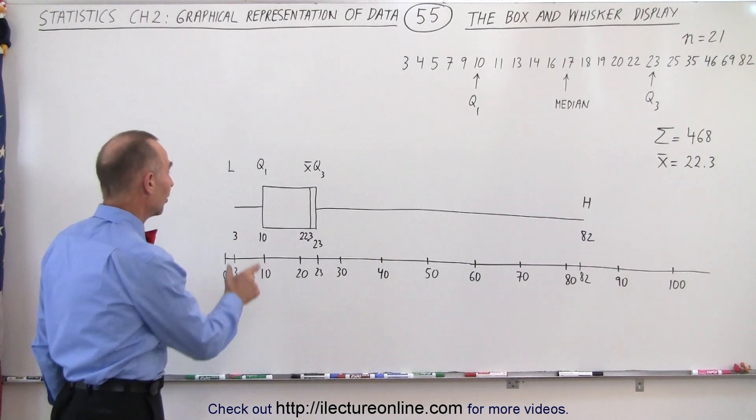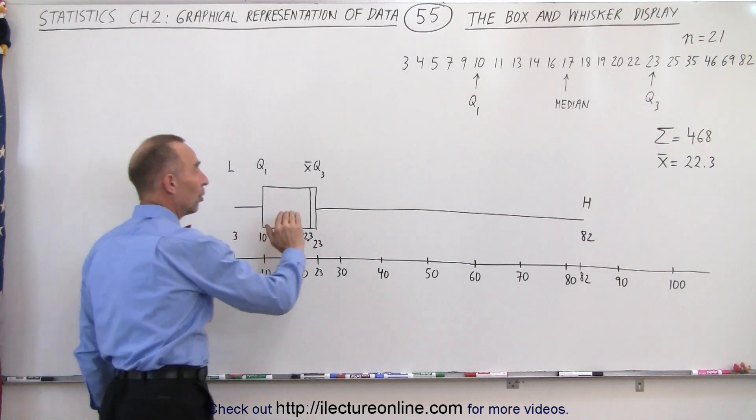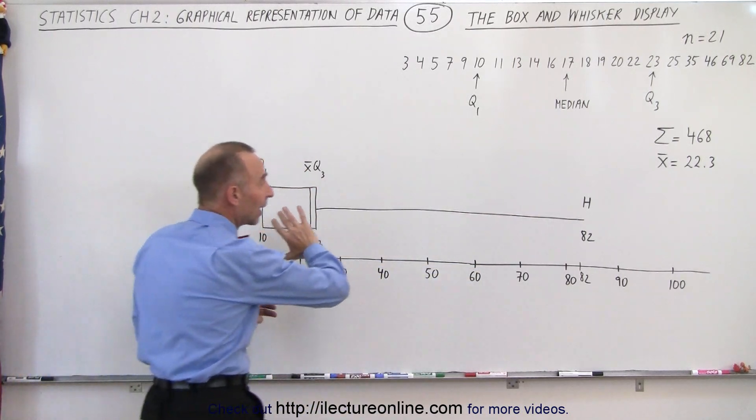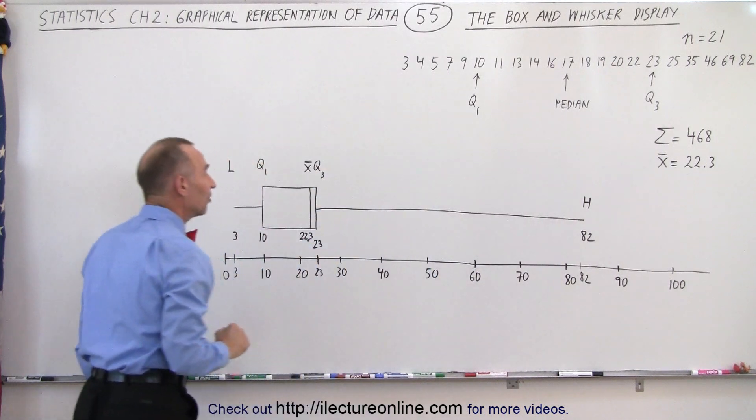Notice in this case the whisker on one side is very short, the whisker on the other side is very long, which indicates that there's probably some very big outliers on the high side of the data set.